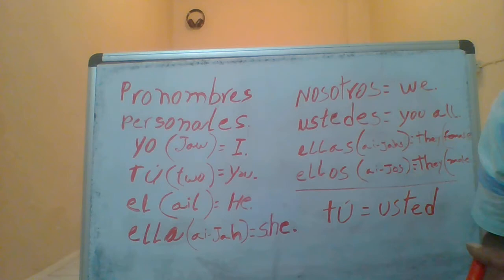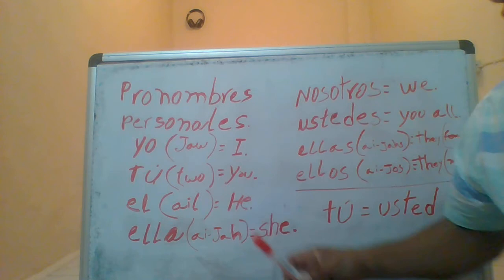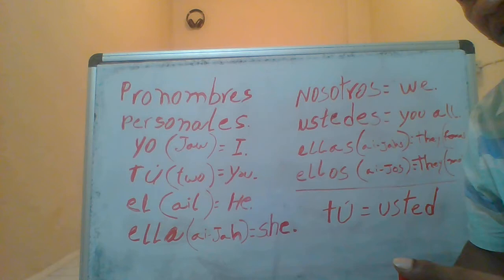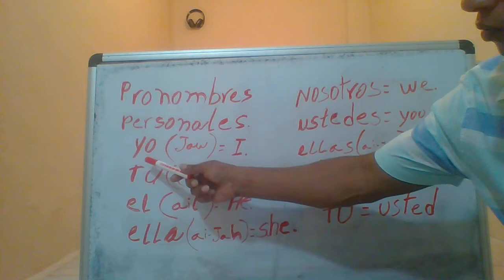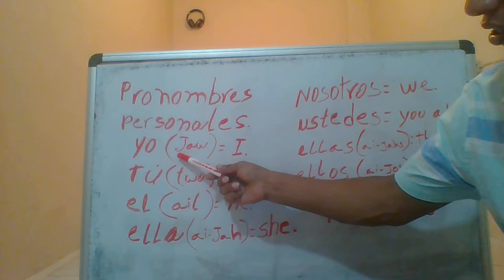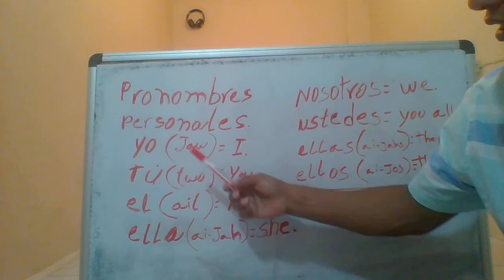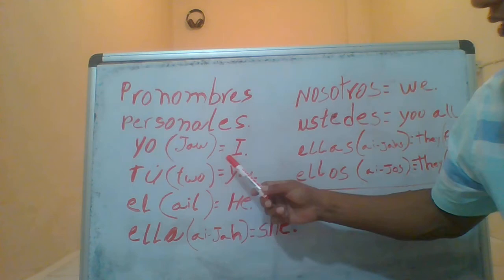Before we continue, I want to explain this word here: 'yo.' That's a Spanish word. As an English speaker, when you read this, you might say 'yo.' But you must remember when the Y is before a vowel, you pronounce it like 'je.' That's why we pronounce it 'yo.' It's not perfectly accurate, but it is something like how we most pronounce this word.